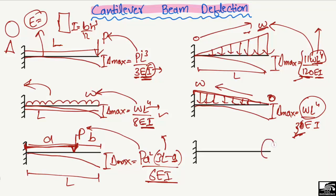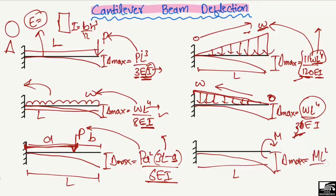The final case is when a moment M is acting on the beam. If L is the total length, the maximum deflection again occurs at the free end, and the maximum deflection is equal to ML² divided by 2EI. In this way we can find the maximum deflection for different load conditions on a cantilever beam. Hope you guys understand these formulas, and don't forget to subscribe to our channel. Thank you for watching.